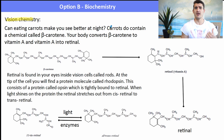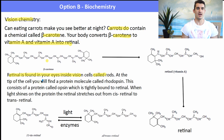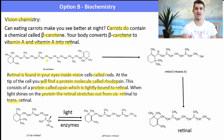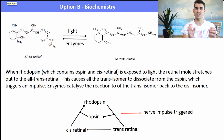Okay, vision chemistry. If you eat carrots, does that make your sight better at night? Well, not particularly. A chemical called beta-carotene is found in carrots and that's converted into retinal, which is found in your eyes in the vision cells called rods. At the tip of these cells we find the protein molecule rhodopsin, which consists of another protein called opsin tightly bound to retinal - retinal is coiled into this opsin. When light shines on the protein, the retinal stretches out from its cis to trans form, so we have cis retinal and trans retinal.